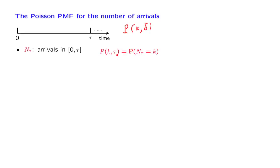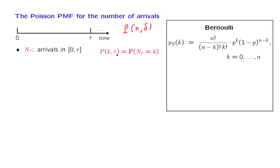Now, if instead of the Poisson model we had the Bernoulli process model, we would know the answer. The number of successes, or number of arrivals in n slots, has a PMF given by the binomial formula. Can we somehow use what we know about the Bernoulli process to find the answer for the Poisson process?